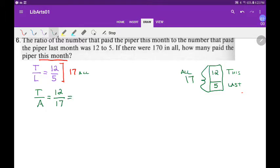And now they're going to tell me there were 170 in all. In all. So the 170, all goes on the bottom, right? Okay, so 170 goes on the bottom.